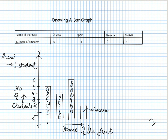The width remains constant, the length varies with the number, and the bars are uniformly spaced and of uniform width. A bar graph is a method to represent data using uniformly spaced bars where the width remains constant and the length varies with the number being represented. I hope this gives an idea about what a bar graph is. Thank you.